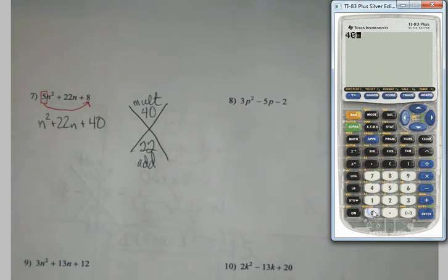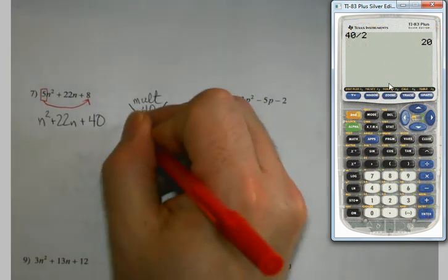Let's see. 40. I'll start dividing by small numbers and see what happens. Oh. 2 plus 20. 22. Awesome.